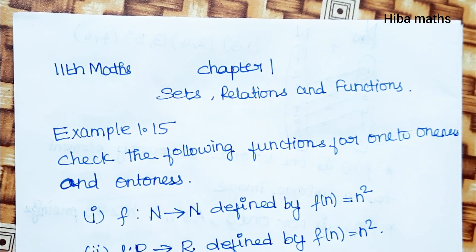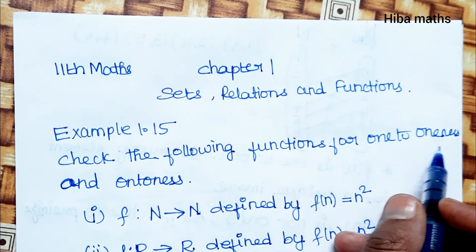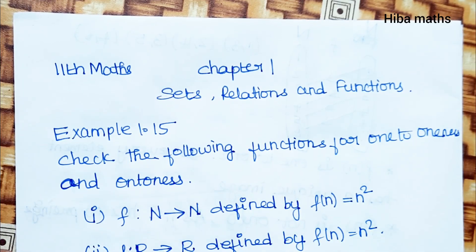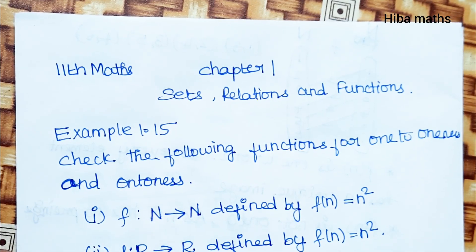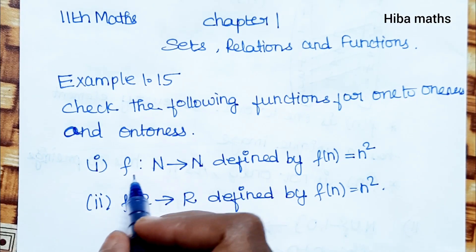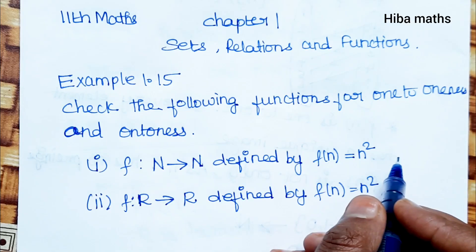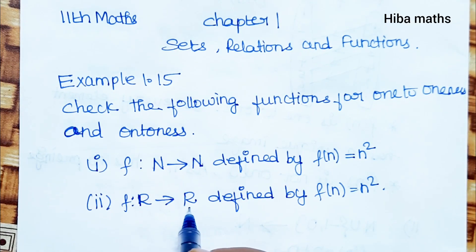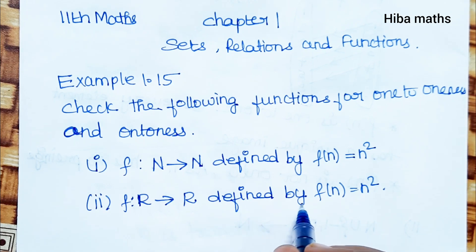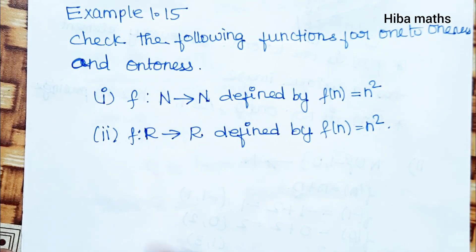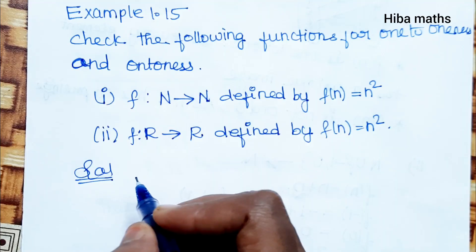Hello students, welcome to Heba Max 11th standard Math, Chapter 1: Sets, Relations and Functions, Example 1.15. We will solve and check the following functions for one-to-oneness and onto-ness. First question: the function f: N → N defined by f(n) = n². Second question: the function f: R → R defined by f(n) = n². Let's solve them one by one with arrow diagrams.